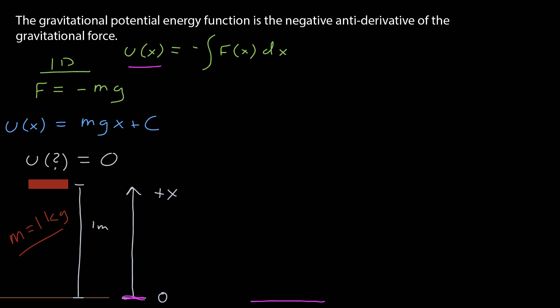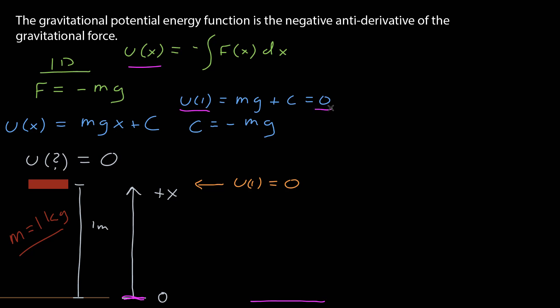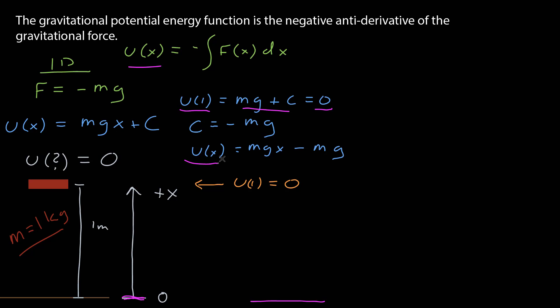That's not the only choice. Let's say I've decided that the potential energy at x equals one is equal to zero. That changes the functional form of the potential energy function, but that's okay. The potential energy evaluated at x equals one is zero, which means mg times one plus C equals zero, so C equals negative mg. Plugging that in, the potential energy function is mg times x minus mg, which factors to mass times g times the quantity x minus one.